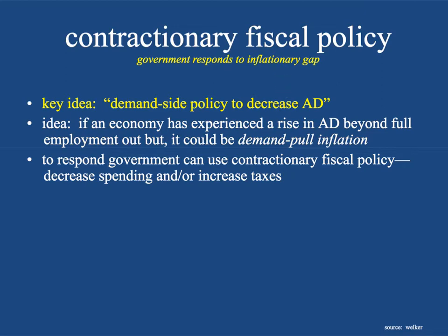You'll hear this in the news all the time. The government says the United States economy is expanding too rapidly and they're going to slow it down. And you might think, expanding economy sounds great. Well, expanding at a certain rate matters. If you think back to your studies of economic growth, you want a level of around 2–3% growth every year, depending on your country. If you're a developing nation, higher is sustainable, but you want it consistent. You don't want huge fluctuations — like 4% growth, then 1%, then 3% — because price levels go all over the place.